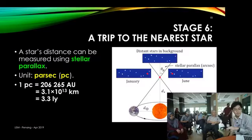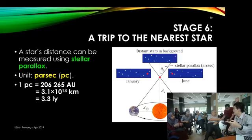I didn't explain how we measure these distances. We cannot use laser anymore because it's so far away — it takes years to bounce back, and when it does bounce back it would be so weak we probably wouldn't even detect it. So the one way that people do it is using stellar parallax.